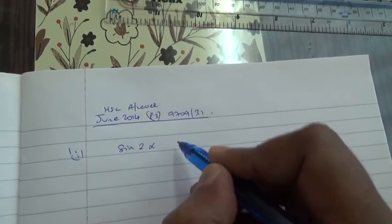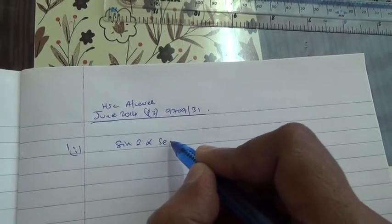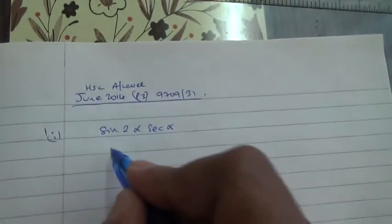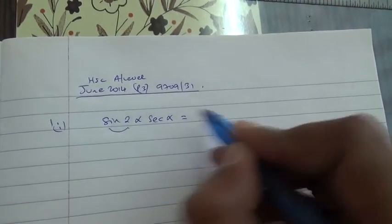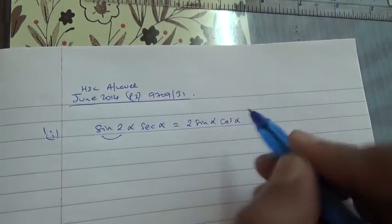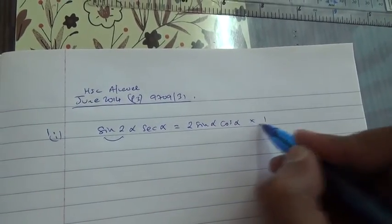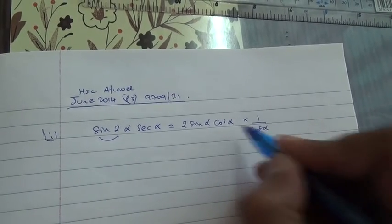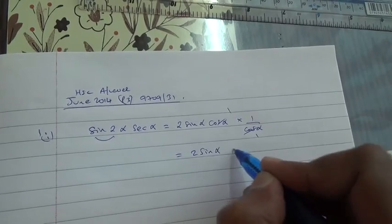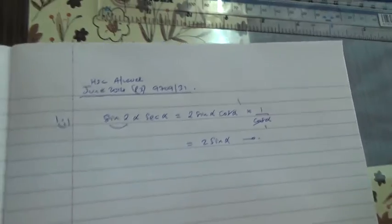sine of 2 alpha sec alpha. And what is sine of 2 alpha? This is double angle formula, and this is basically 2 sine of alpha cos of alpha. And what is sec of alpha? It is 1 upon cos of alpha. For the first part, this is done, you have 2 sine alpha, here we are.